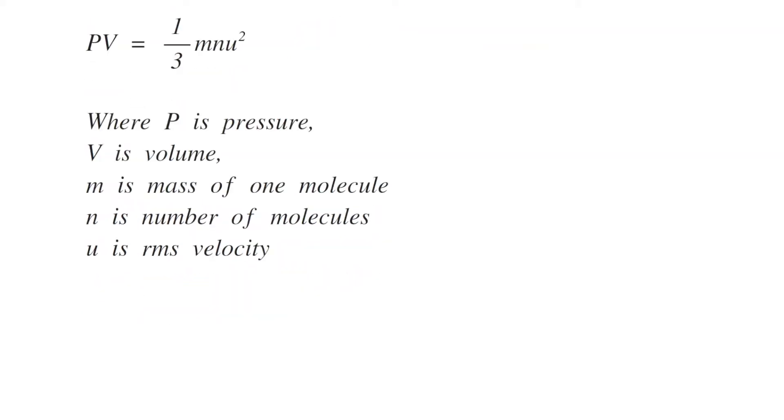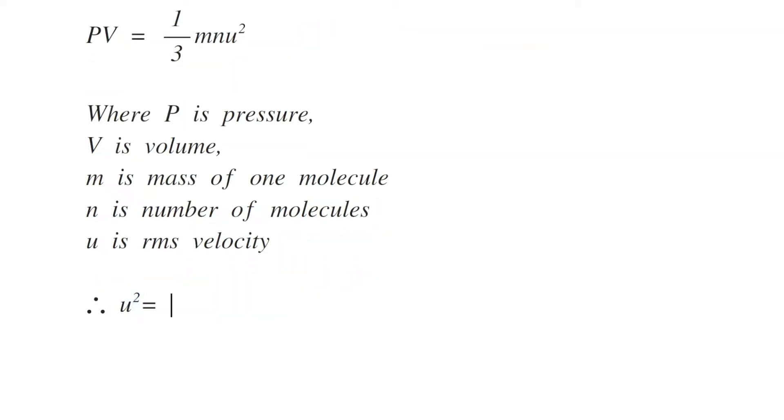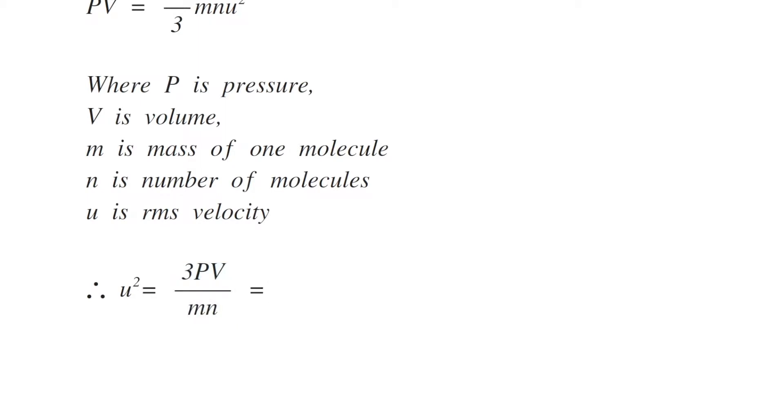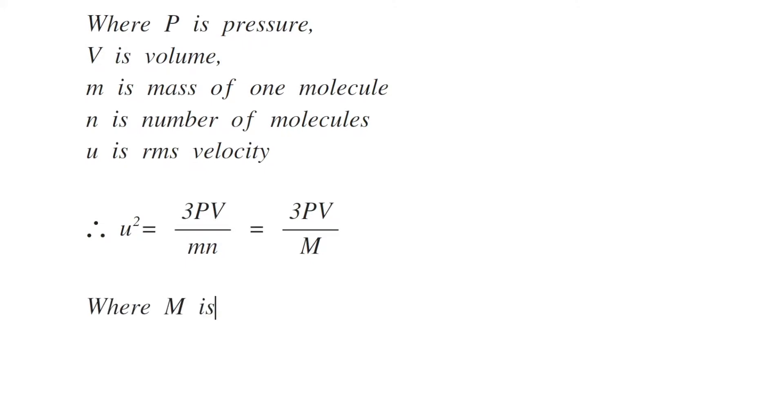So, U square becomes 3 PV by MN, or 3 PV divided by capital M, where capital M is the product of M and N, which is the total mass of the gas.